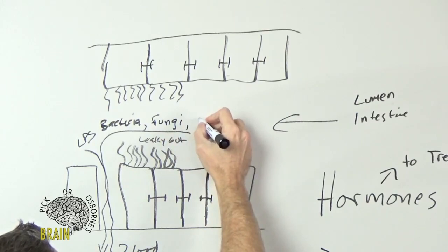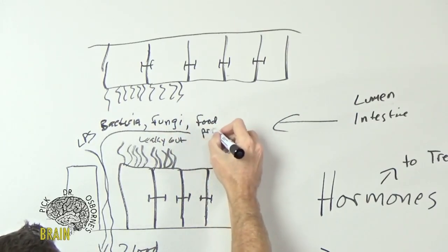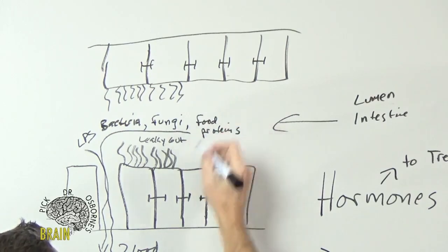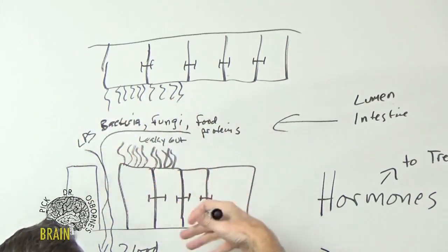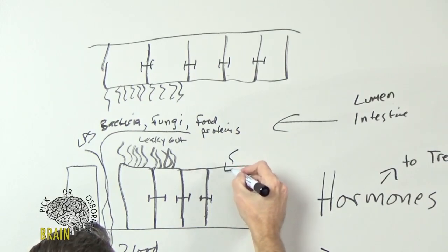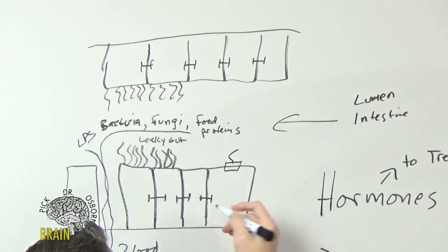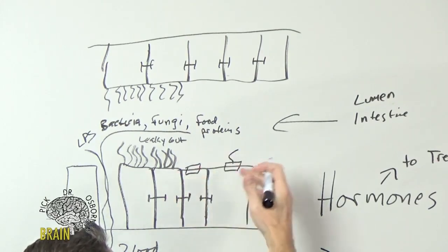Bacteria, fungi, and other compounds like food antigens and food proteins should stay in the gut unless they're properly broken down. The carbs, fats, proteins, amino acids, simple sugars, vitamins, and minerals are the things that are supposed to pass through.